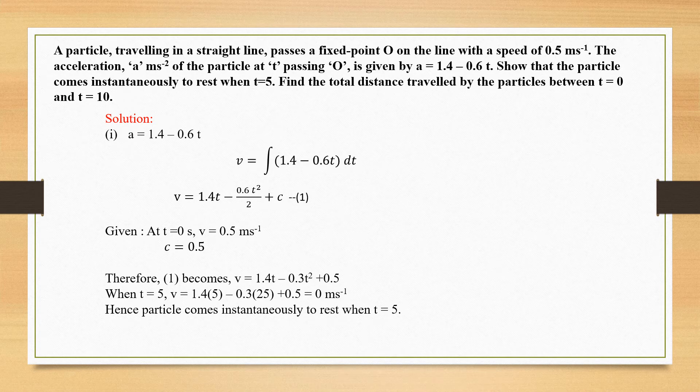Next problem: a particle travelling in a straight line passes through a fixed point O with a speed of 0.5 m/s. The acceleration A m/s² of the particle at time T after passing through O is given by A = 1.4 − 0.6T. Show that the particle comes instantaneously to rest when T = 5, and find the total distance travelled between T = 0 and T = 10.